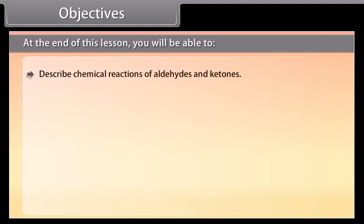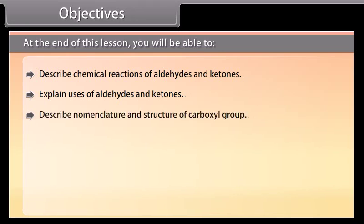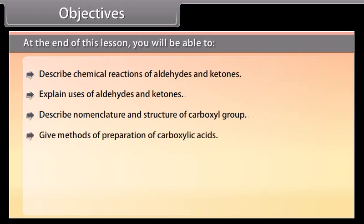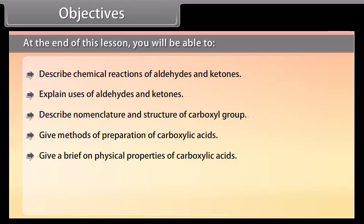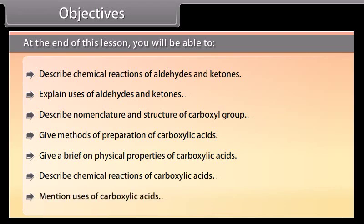At the end of this lesson, you will be able to: describe chemical reactions of aldehydes and ketones; explain uses of aldehydes and ketones; describe nomenclature and structure of the carboxyl group; give methods of preparation of carboxylic acids; give a brief on physical properties of carboxylic acids; describe chemical reactions of carboxylic acids; and mention uses of carboxylic acids.